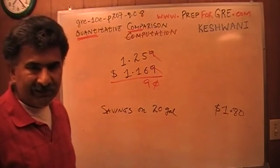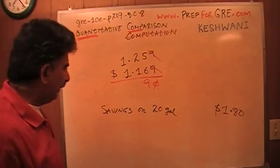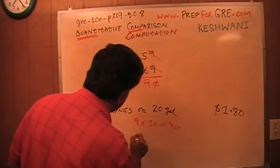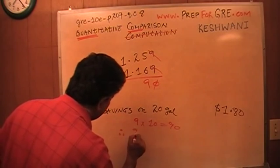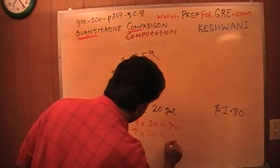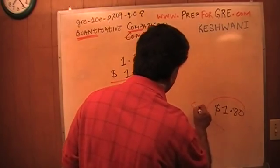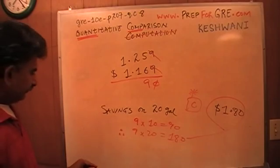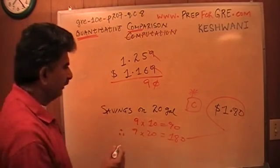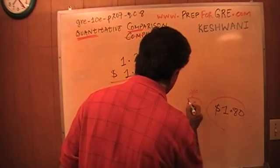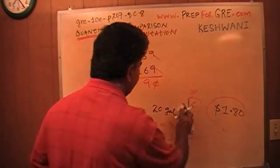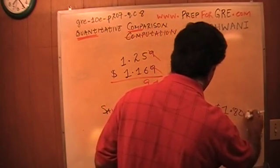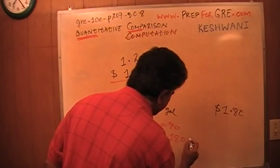I know 9 times 10 is 90, therefore 9 times 20 will have to be $1.80. The answer is $1.80, which is the same as the other column. The answer is C. The answer is C, because here you got $1.80.